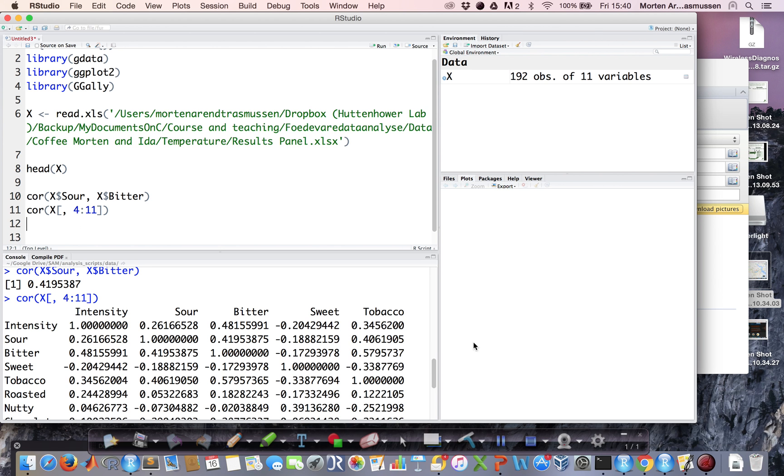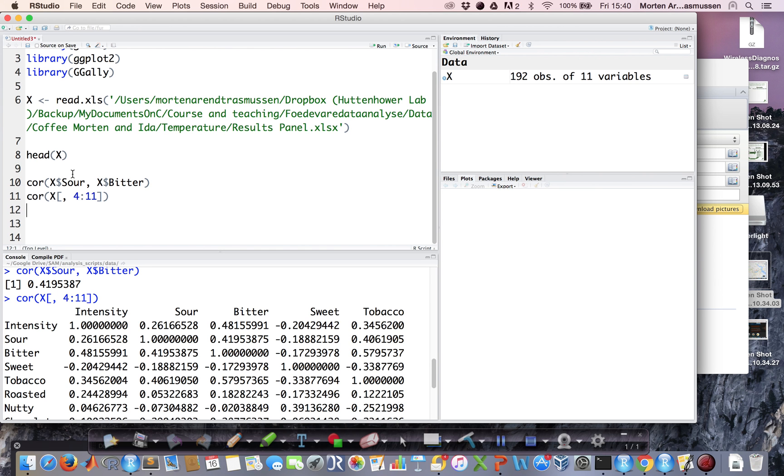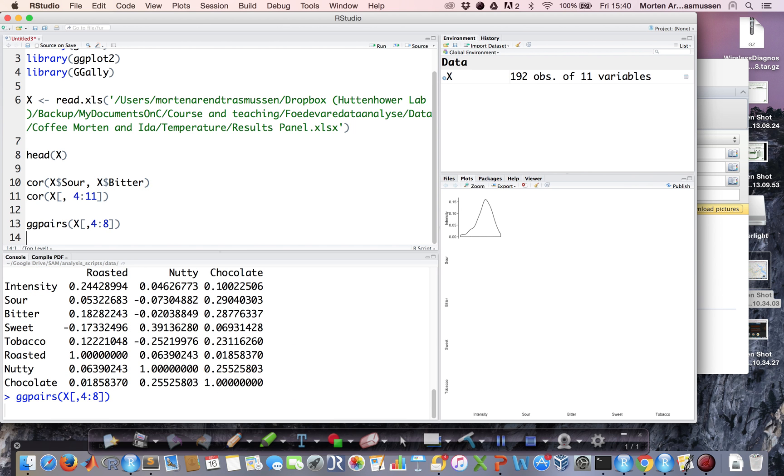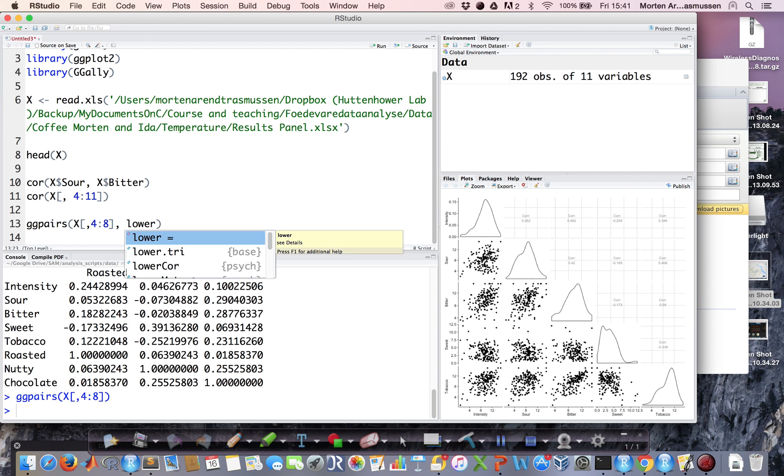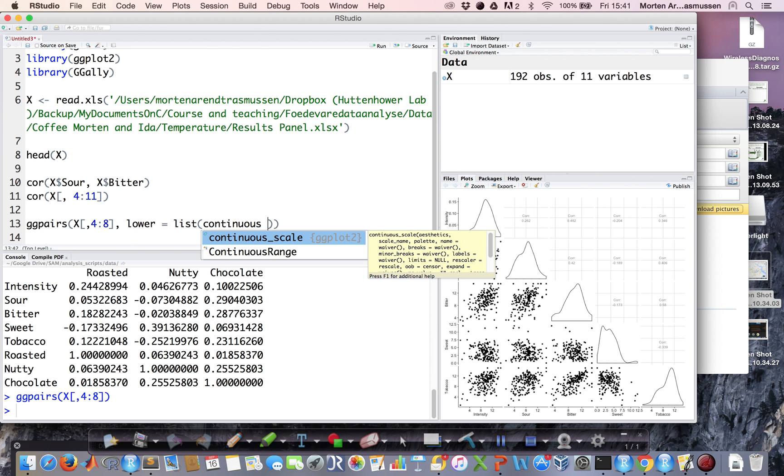If you want to visualize more than just two variables versus each other, you can use the package ggally, which has a nice function called ggpairs, where you put in your data matrix. I would like to see some of the response variables plotted. If I execute this function, I get a matrix, just like a matrix of the correlation coefficient, but with all the pairwise combinations of plots. In the diagonal, I have the distribution, the histogram or densitogram of the individual variable. Here I have the scatter plots. On the upper diagonal, I have a metric stating the correlation coefficient.